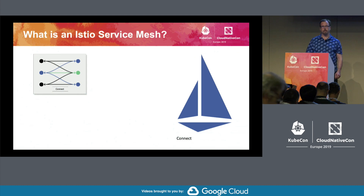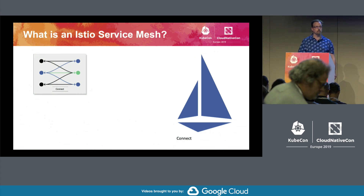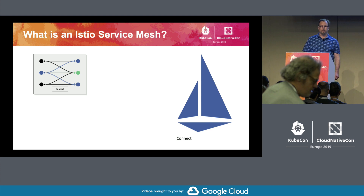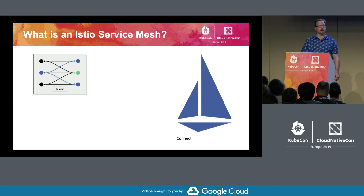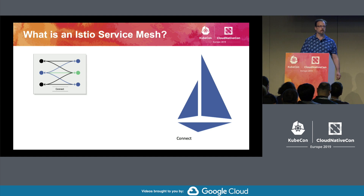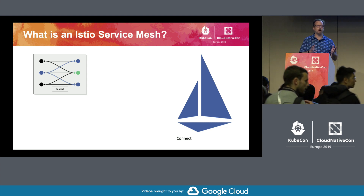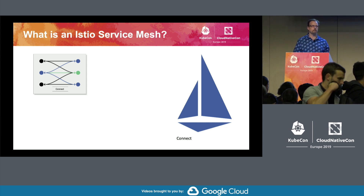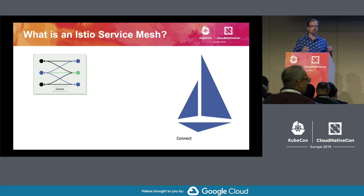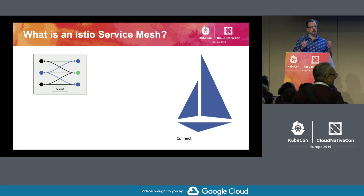I'm going to start with the basics. The first and foremost purpose of a service mesh is to connect services together. When we connect services together, we use Envoy, which runs in a process next to another process, typically injected into a pod. The service mesh connects those pods and sidecars together into a mesh — that's one of the fundamental properties of an Istio service mesh. That connectivity is important because it's L7 connectivity versus L3, which is what typical networking is based upon.